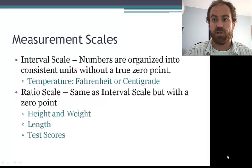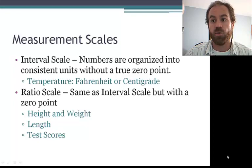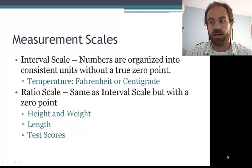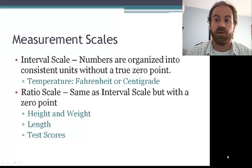We have interval scales indicating a relationship between the numbers in the set in which the numbers are organized into consistent units with no true zero point. So in an ordinal scale, such as race results, the difference between first or second may be considerably different than the difference between second and third. Whereas in an interval scale, the difference between numbers is consistent.